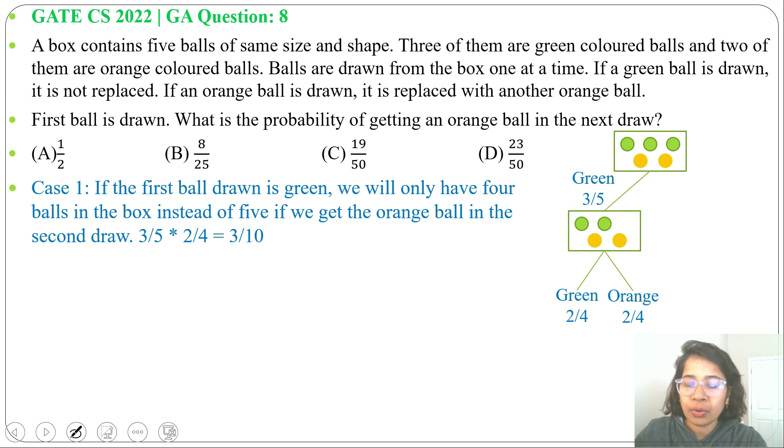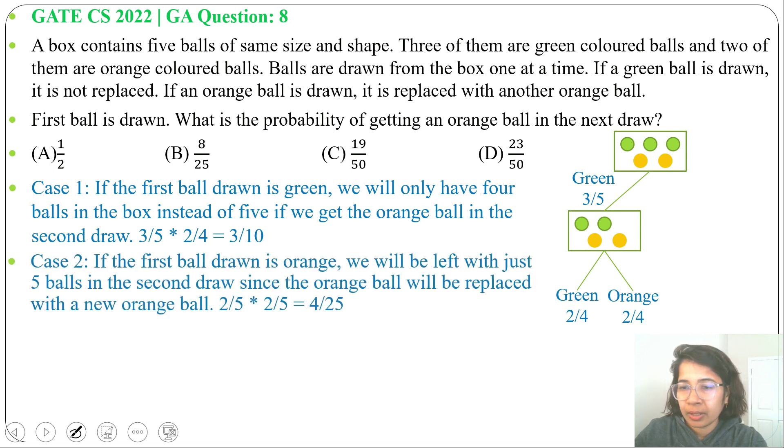Next case 2, if we pick orange ball in first time. So after picking orange ball we can replace it. So there will be same number of balls, 3 green and 2 orange. So probability of picking orange ball is 2 divide 5. Now from that 5 either we can pick green or orange. So picking green will be 3 by 5 and picking orange will be 2 by 5.